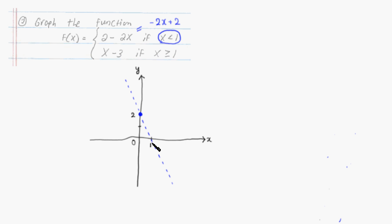we're gonna put an open circle at 1. Then we can only keep the graph to the left of x equals 1. So that's the first piece.